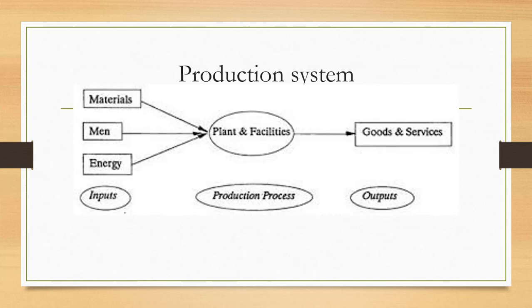For example, if an industry produces a bearing or a gear, that is known as a production industry. If an industry does not produce any product but provides only a service to the customer, it is known as a service industry. Any production system has output in the form of goods or services, and to produce them, we utilize a plant and facility and perform certain production processes like casting, forging, or any kind of machining process.